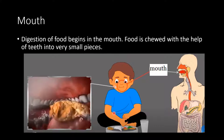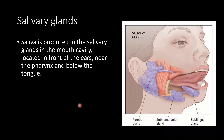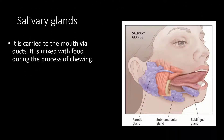Now let us understand the different parts of the digestive system. First, the mouth: digestion of food begins in the mouth, where food is chewed with the help of teeth into very small pieces. Next, the salivary glands: saliva is produced in the salivary glands located in the mouth cavity, in front of the ears, near the pharynx, and below the tongue. It is carried to the mouth via ducts and mixed with food during chewing.